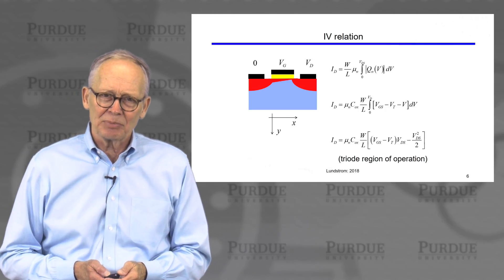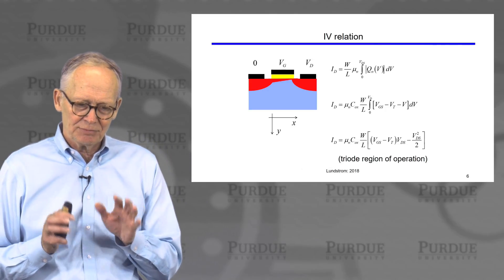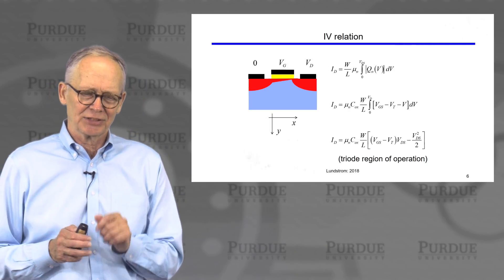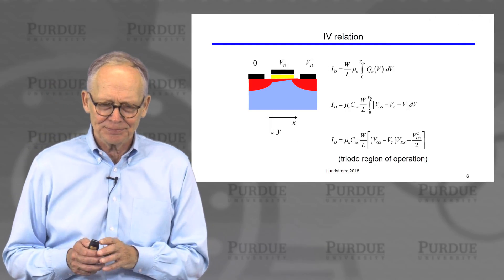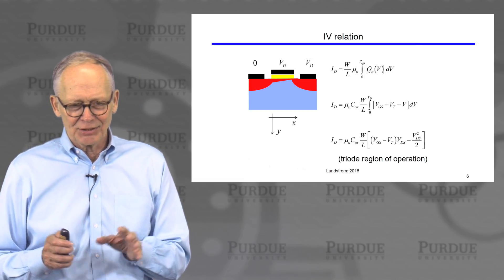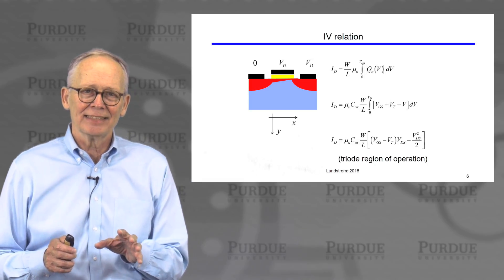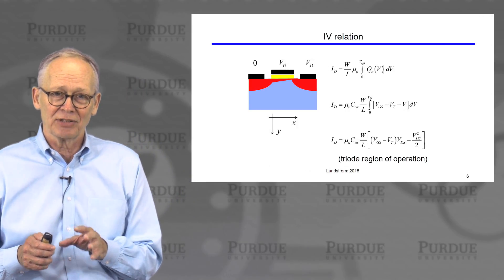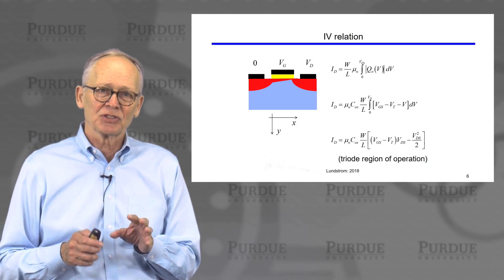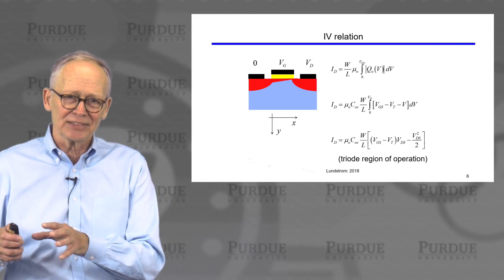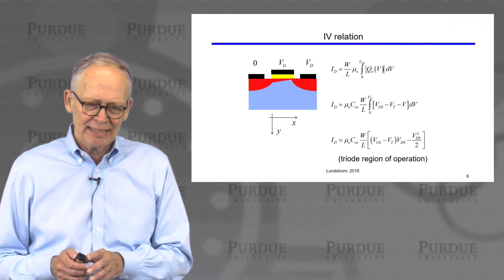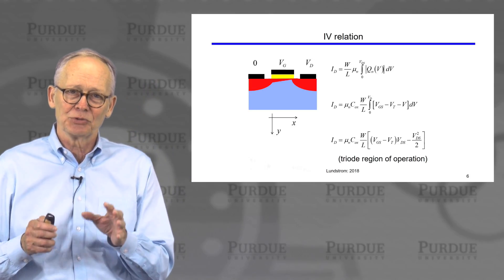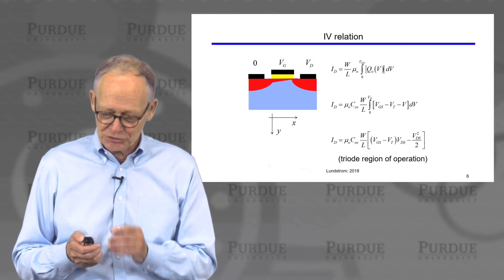This region of operation is known as the triode region. Why is it called triode? Because in the 1960s, when people were first figuring this out, vacuum tubes were still the dominant electronic device. When people saw the IV characteristics of these new transistors, they said it looks like the IV characteristic of a vacuum tube triode — and that's why it's called the triode region.